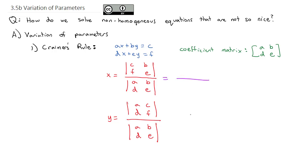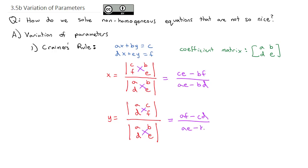We've already talked about how to solve a 2×2 determinant. We multiply the diagonals: c times e, and subtract b times f. The denominator is ae minus bd. That would be the solution for x. And to find the solution for y, it would be af minus cd over ae minus bd. That works for every system of equations.